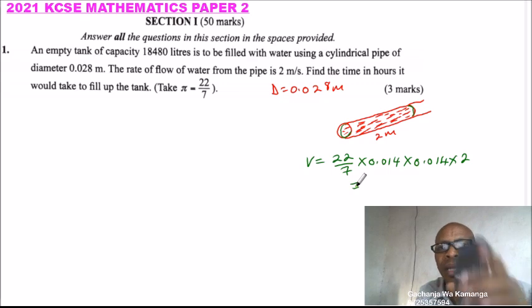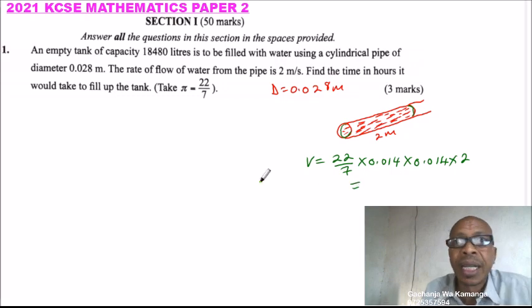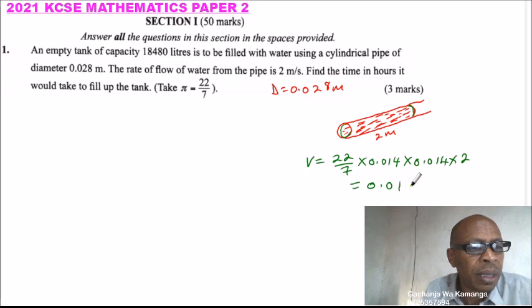Using your calculator, the recommended one, you say this is pi, multiply by 0.014, multiply by 0.014, and multiply by 2. Let me check that again. So this is pi, you multiply by 0.014, multiply by 0.014, and multiply by 2. That gives 0.001232.